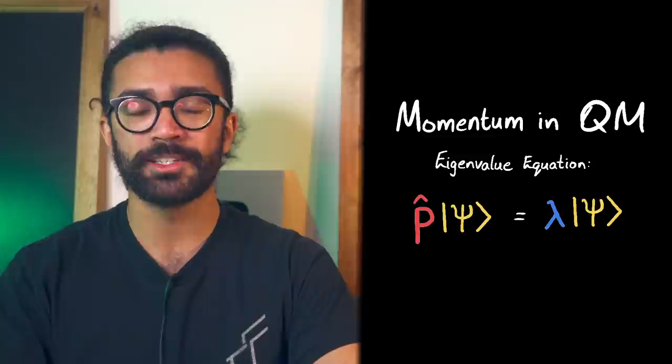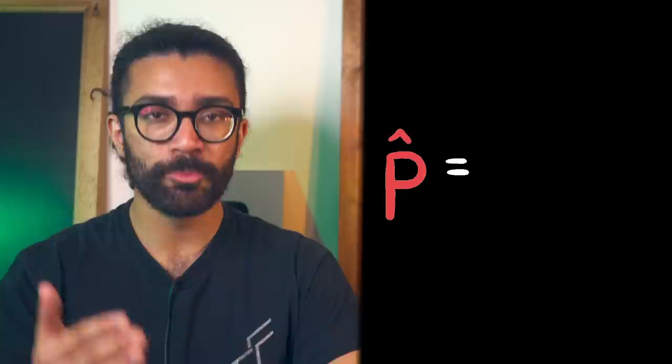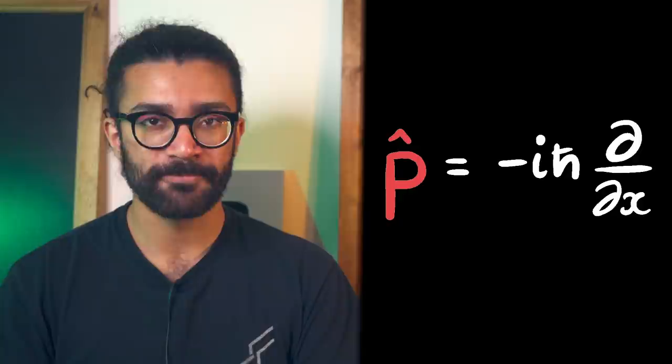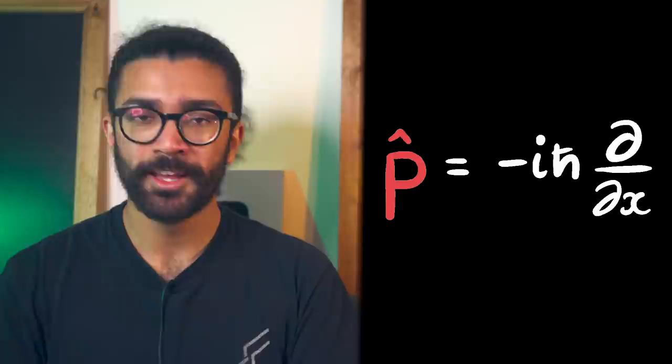So for this video, let's focus on what the momentum measurement operator looks like, mathematically speaking. Does it look as simple as m times v? The answer to that is no. The momentum operator looks something like this. Minus i h bar d by dx. So what on earth is going on?